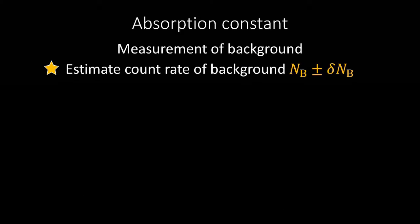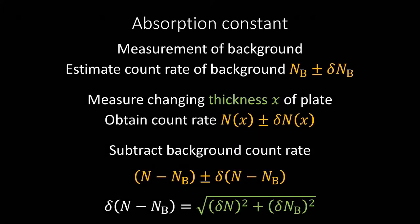When the measurement is finished, determine the background count rate, NB, and its error, delta NB, from the background count measured at the beginning. Next, the counting rate, N, is obtained from the counts measured while changing the thickness, X, of the absorber. From this count rate, N, we subtract the background count rate, NB. We also calculate the error.